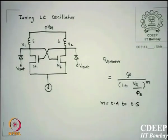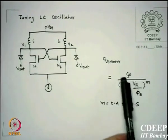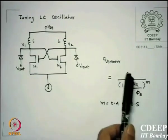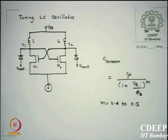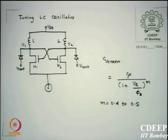For a p-n junction, depending on whether it is an abrupt junction, linearly graded, or exponential, the reverse bias capacitance is given by the zero-bias capacitance divided by (1 + Vr/φb)^m, where φb is the built-in voltage, Vr is the reverse bias, and m is a factor decided by the kind of junction.